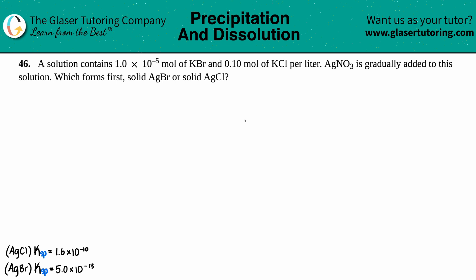Number 46: the solution contains 1.0×10⁻⁵ moles of potassium bromide (KBr) and 0.1 moles of potassium chloride (KCl) per liter. AgNO₃ is gradually added to the solution — what forms first, solid AgBr or solid AgCl? Let's figure it out. We're talking about solids forming — that's precipitation — so that's all about solubility products.